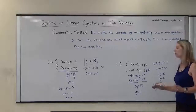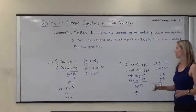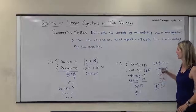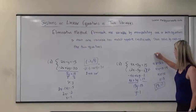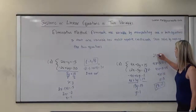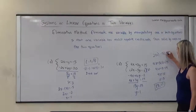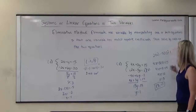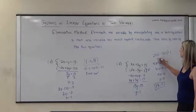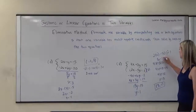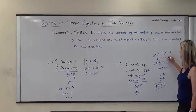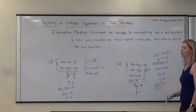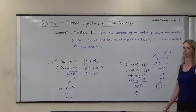I want to know for sure that I have the right answer, so I'm going to check with that second equation. Does 2 times 3 minus 5 times 1 really equal 1? That's 6 minus 5, which is equal to 1. So I feel pretty confident that 3, 1 is the correct solution.